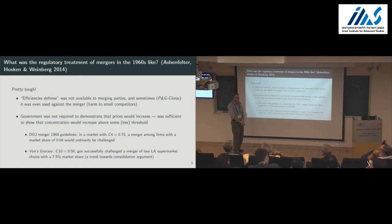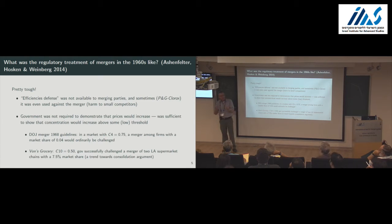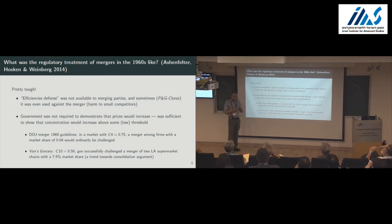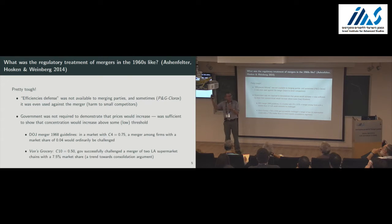The way to deal with that argument would be to attack the market definition and say: you're getting this wrong, we are also competing with all these other guys, so the market is not as concentrated as you think. In the merger guidelines for 1968, they basically said that in a market where the combined market share of the top four companies is 75%, a merger among firms with the combined market share of 4% would be ordinarily challenged. That's pretty tough — you think about very small companies that want to merge, but because the industry is already somewhat concentrated, you don't allow that.